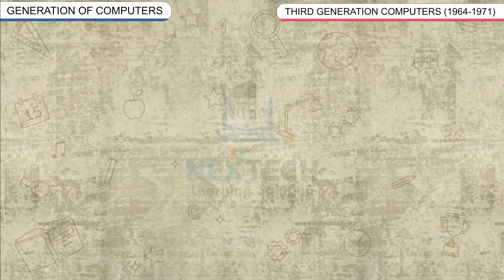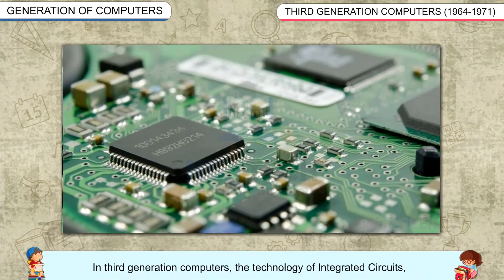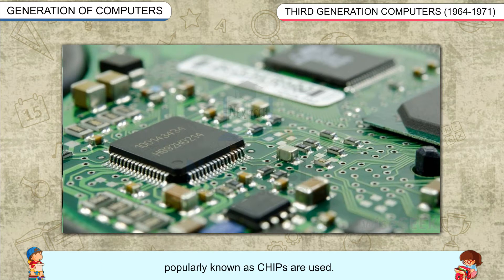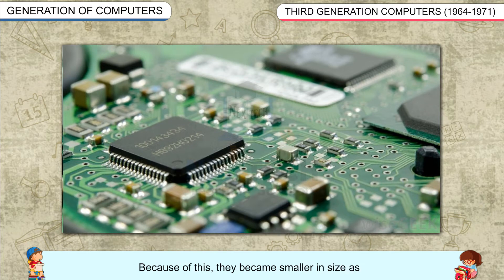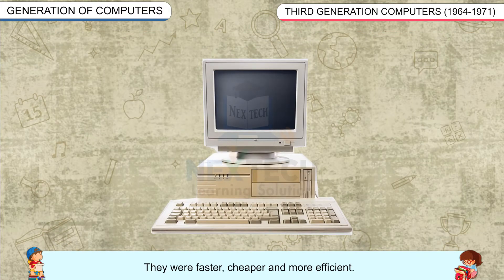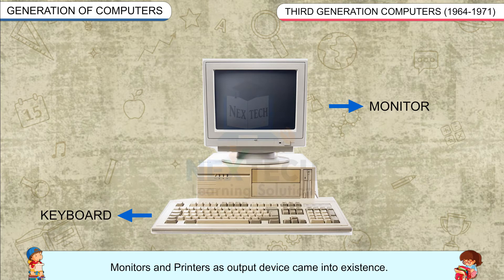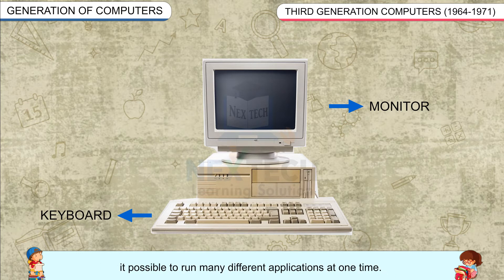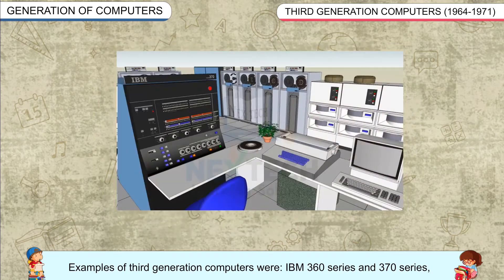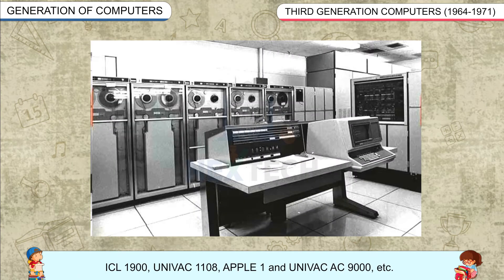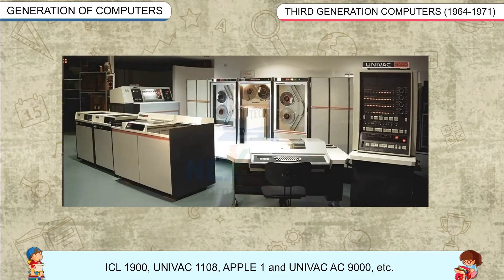Third Generation Computers, 1964–1971: In third generation computers, the technology of integrated circuits, popularly known as chips, was used. A chip could contain thousands of transistors within it, making them smaller in size compared to second generation computers. They were faster, cheaper, and more efficient. The use of the keyboard as an input device, and monitors and printers as output devices, came into existence. This generation used operating systems, making it possible to run many different applications at one time. Examples include IBM 360 series and 370 series, ICL 1900, Univac 1108, Apple One, and Univac AC 9000.